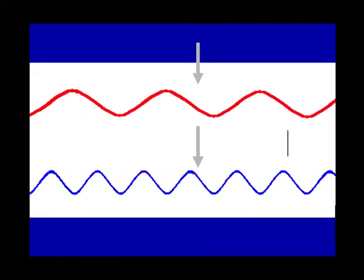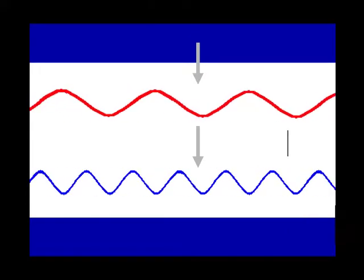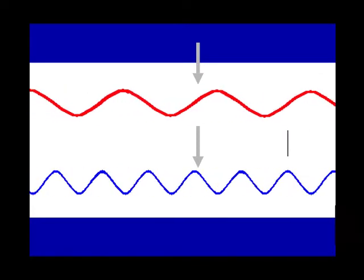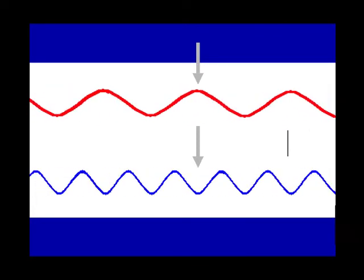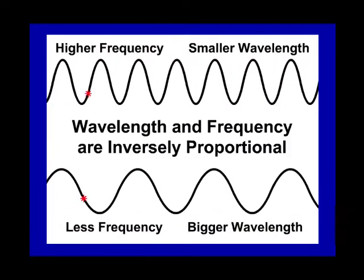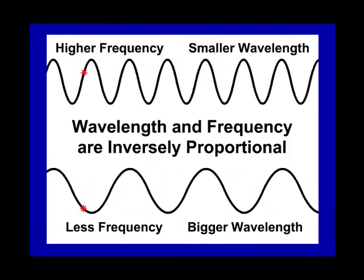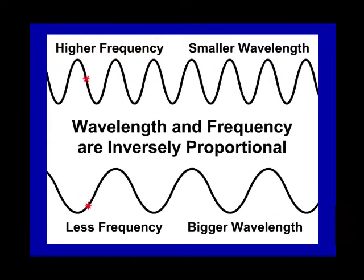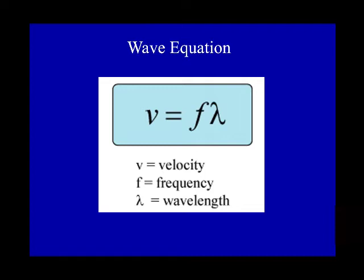Another property we can measure is frequency — how often a wave passes a given point. The red wave has a lower frequency than the blue wave. Frequency and wavelength are related mathematically: higher frequency equals smaller wavelength. More precisely, the wave equation is: wavelength times frequency is equal to the velocity of the wave.